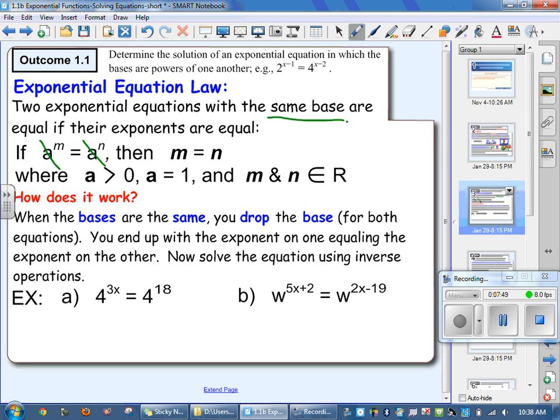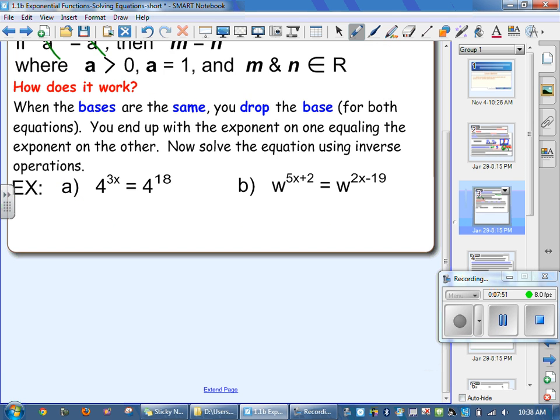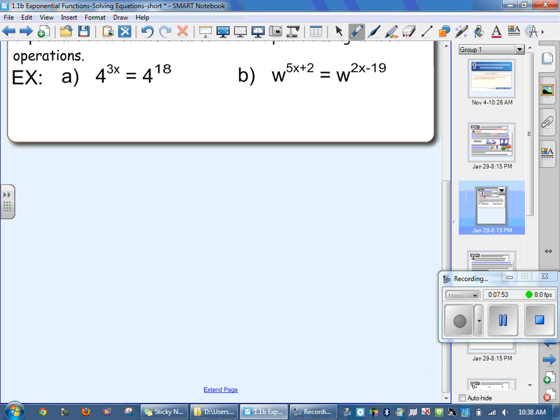Let's do example A and B together. So I know the bases are the same. I'm going to drop them, and now I get 3x equals 18. How do I solve for x with 3x equals 18? You divide by 3. Opposite operations or inverse operations, meaning opposites.